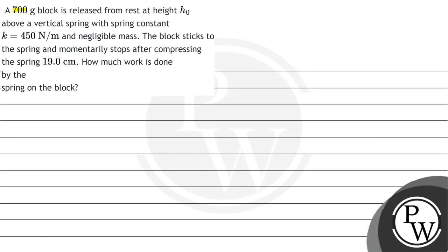The question says that a 700 gram block is released from rest at a height H0 above a vertical spring with spring constant k equals 450 N per meter and negligible mass. The block sticks to the spring and momentarily stops after compressing the spring 19 cm.